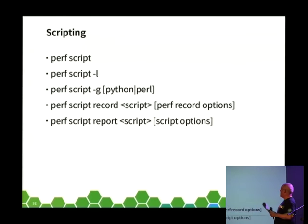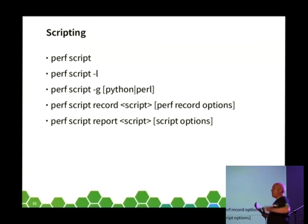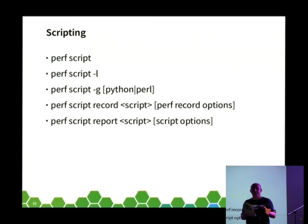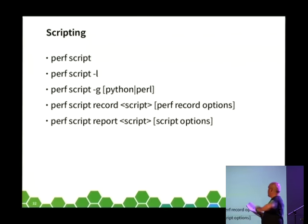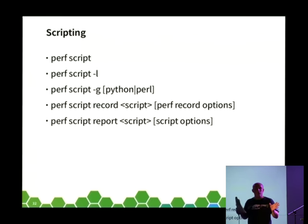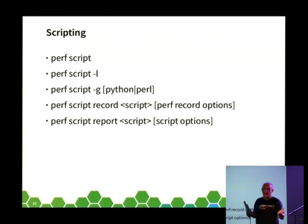Perf script is the last basic command: perf record produces a perf.data file, and perf script by default produces an ASCII dump of that file in a format suitable for parsing with other tools. There are already pre-canned scripts on the system — run 'perf script -l' to list them in Python and Perl. To write a new script, use 'perf script -g python' or '-g perl': it opens the perf.data file, looks at what event types are recorded, and generates a skeleton script with an entry point for each event type. Fill it in, install it, and you can invoke it with 'perf script record <scriptname>' and 'perf script report <scriptname>'.